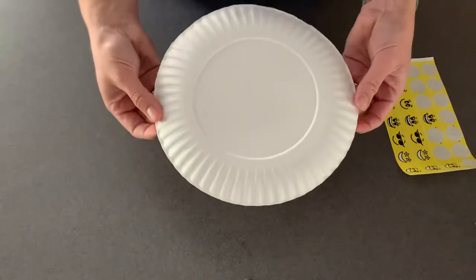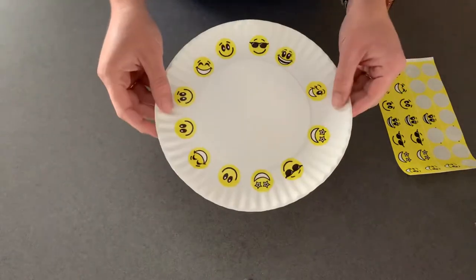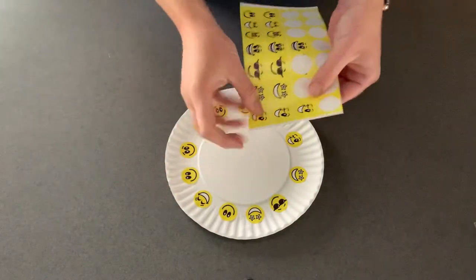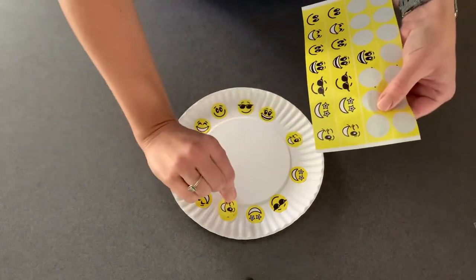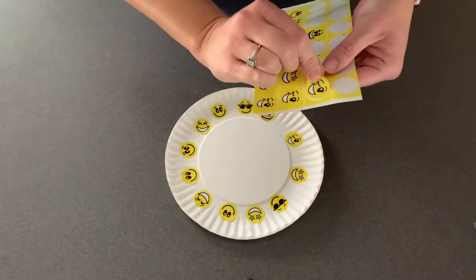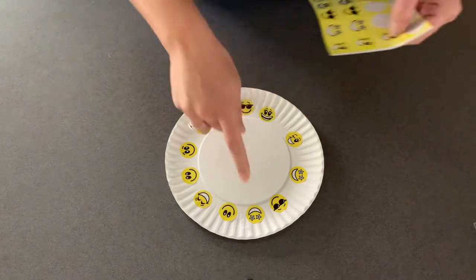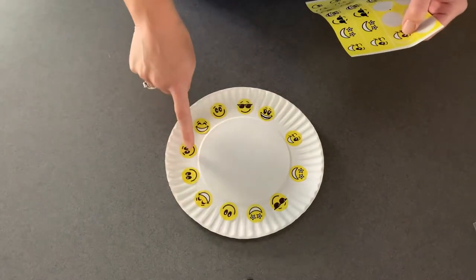I want you to get a paper plate from your bag. I already put the stickers on here just to save some time, but you're going to work on your child peeling the stickers off and then placing them on the paper plate. We're going to put 12 stickers. They don't have to be perfectly spaced.